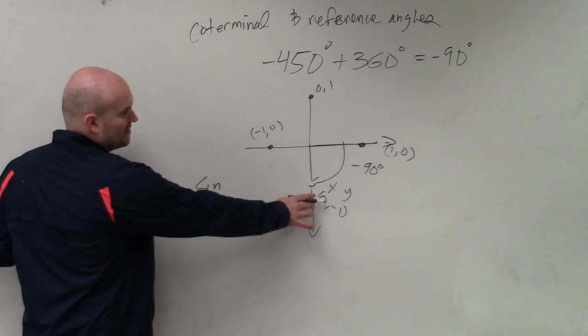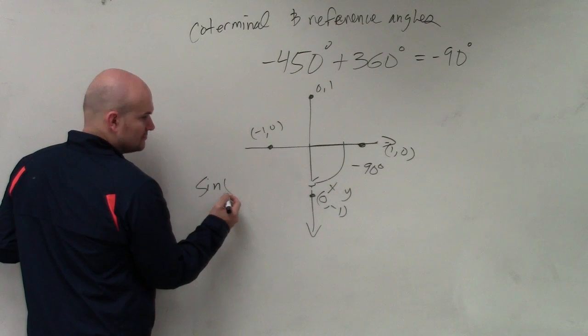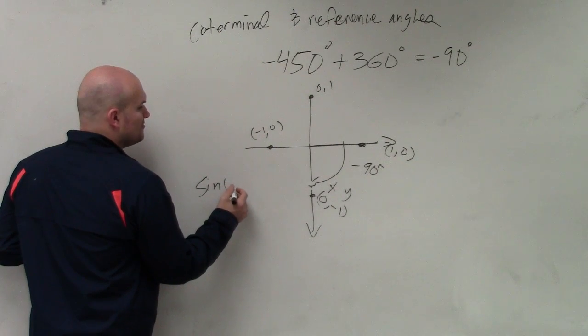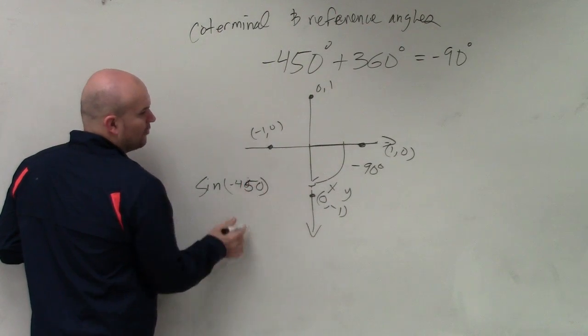So we look at this, though. Here's this point. And so basically, the sine of negative 450 is equal to the y-coordinate,